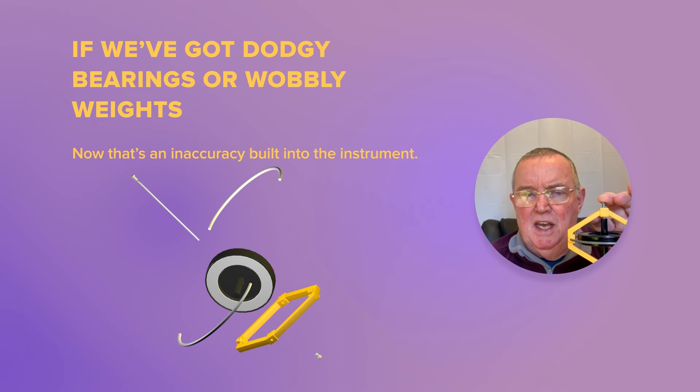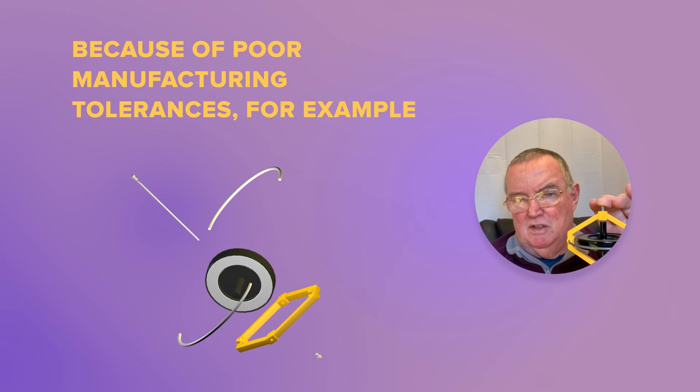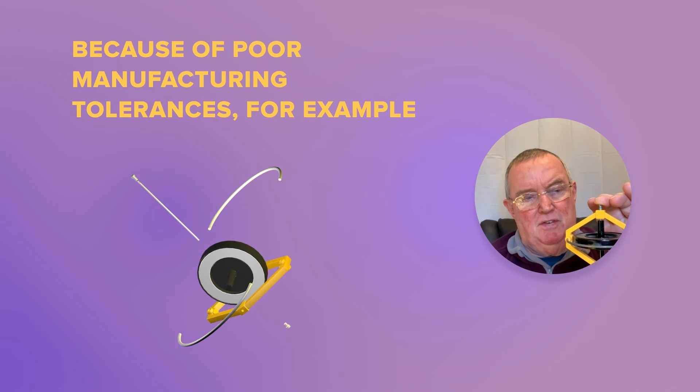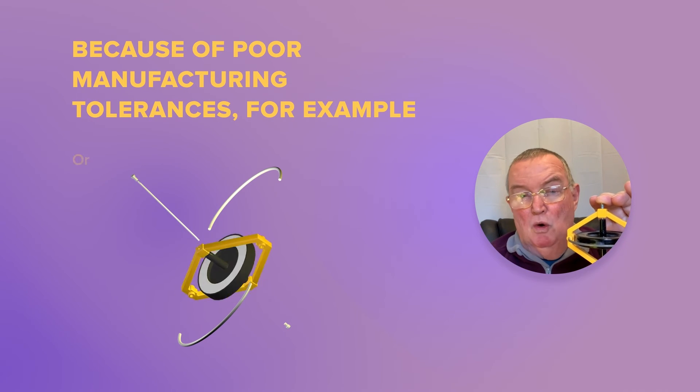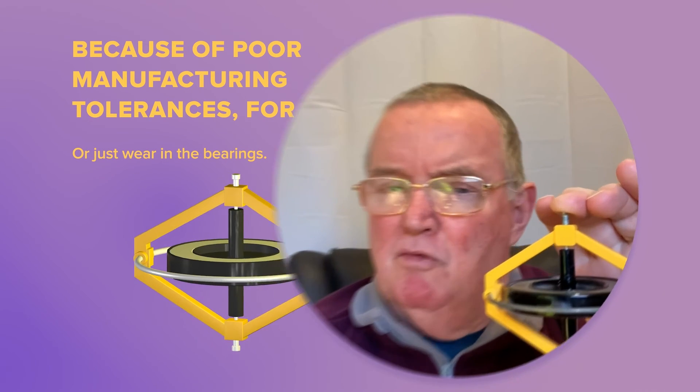Real wander is an inaccuracy built into the instrument because of poor manufacturing tolerances, for example, or just wearing the bearings. So real wander is when we get real topple or we get real drift — that is genuine problems within the instrument.